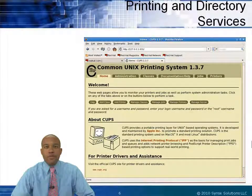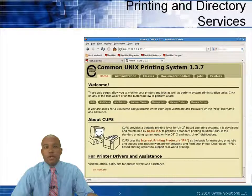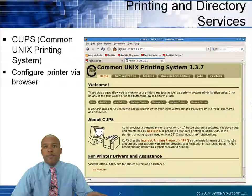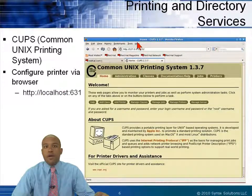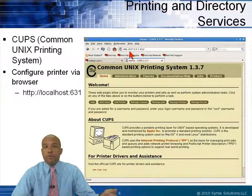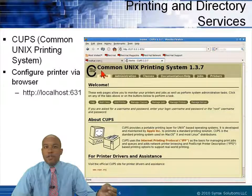Another way to manage CUPS is to use a graphical interface provided by a lightweight web server to administer CUPS. This is part of the CUPS system, and we can configure printers via the browser. Notice up here in the location bar, I'm going to IP port 631. The address is the local host address of the server, or I can do it remotely by putting in a specific IP like 192.168.1.1, or a resolvable domain name, then entering the IP port to bring up this web application for configuring the printer via the browser.